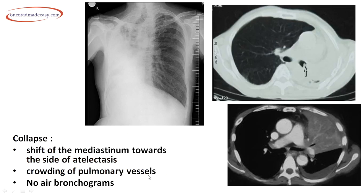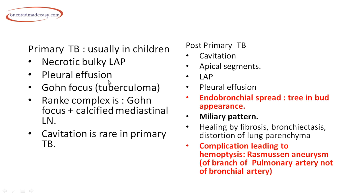In Klebsiella pneumonia there are bulging fissures due to exudates. Another white-out lung, but instead of contralateral shift of the mediastinum, there is ipsilateral shift of the trachea, mediastinum, and cardiac shadow — this is because of collapse of the lung due to obstruction of the airway. Absence of air bronchograms in a consolidation-like opacity means there is a collapse — a very important point.